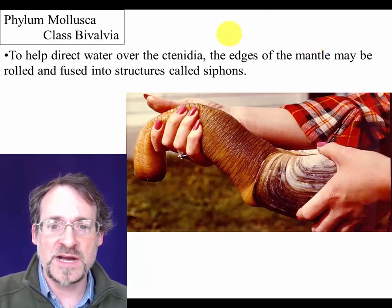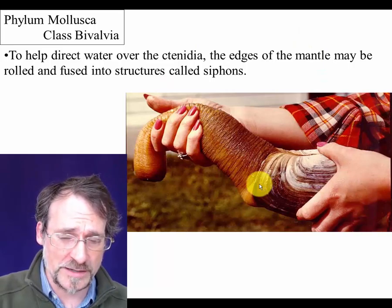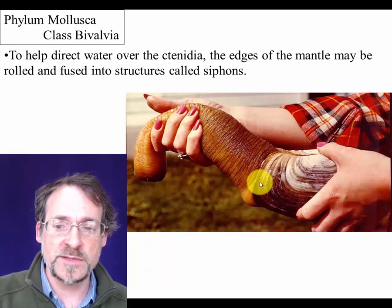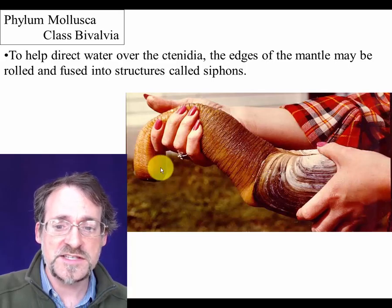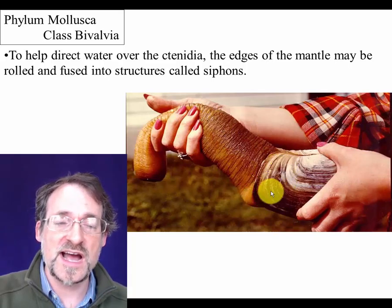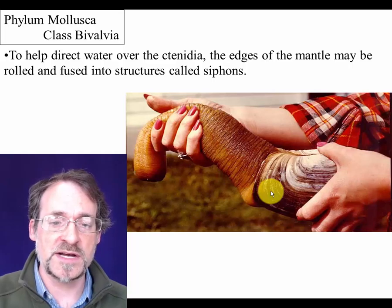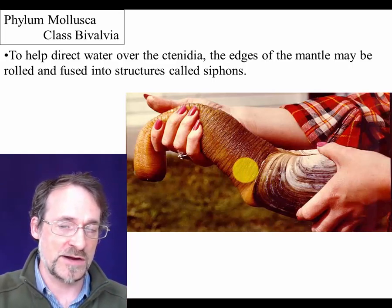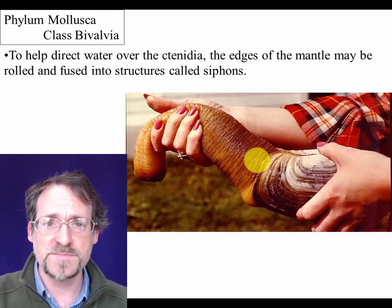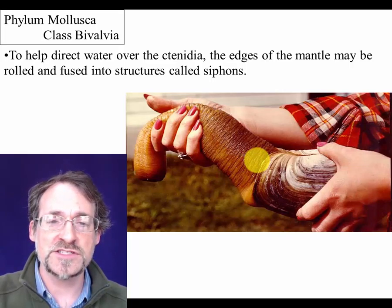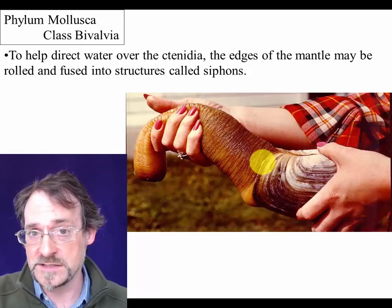In many bivalves like the geoduck — which looks rather disturbing — the siphons are extremely long, longer than the rest of the body. This is helpful because these animals hide by burying themselves very deep in the mud so that only the siphons poke out. This keeps them protected against waves and currents while still allowing them to get their siphon out of the mud in order to feed.